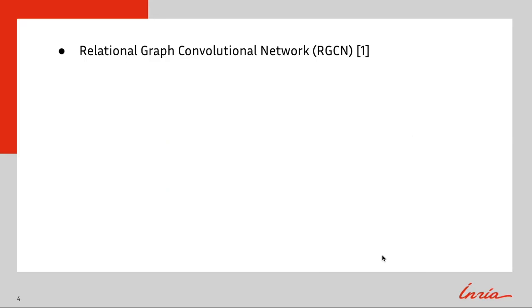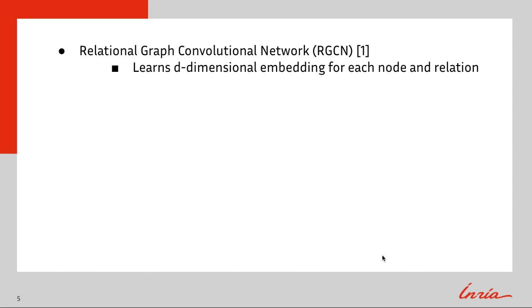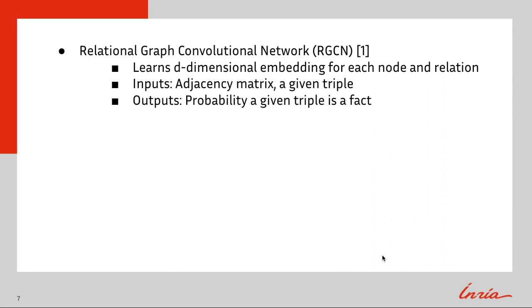A Relational Graph Convolutional Network is an adaptation of graph neural networks specifically for knowledge graphs. This model learns a d-dimensional vector representation of each node and relation in a knowledge graph. This model takes as input an adjacency matrix and a given input triple, outputting the probability that the given input triple is a fact.